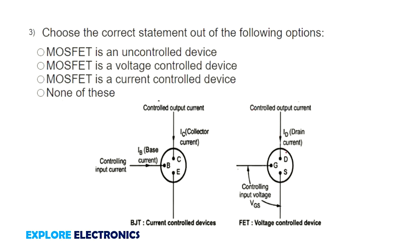Choose the correct statement from the following options. Is MOSFET an uncontrolled device? No. Is MOSFET a voltage controlled device? Is MOSFET a current controlled device? MOSFET is a voltage controlled device. BJT is a current controlled device and FET is a voltage controlled device. MOSFETs come under FET, so we can say MOSFET is a voltage controlled device — we control it through terminal voltages.